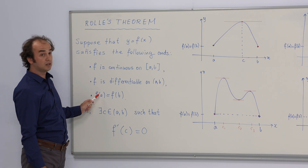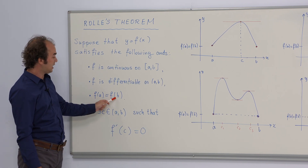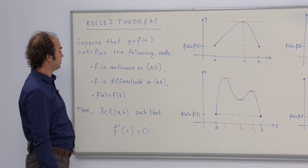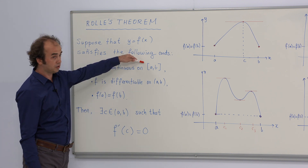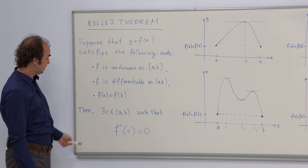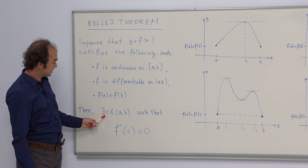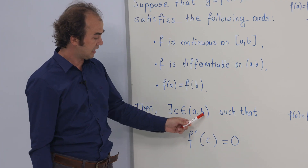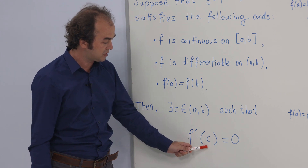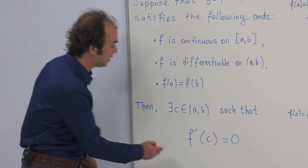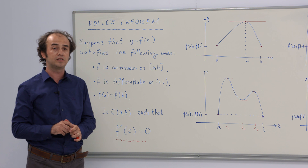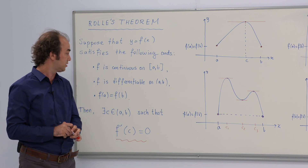The last condition is that the function has equal images at the endpoints a and b. Provided these three conditions are satisfied — continuity on the closed interval, differentiability over the open interval, and equal images at the endpoints — then there exists at least one point c in the open interval a, b such that the first derivative of f at that point c is equal to zero.